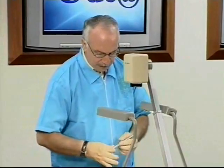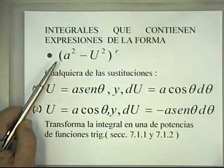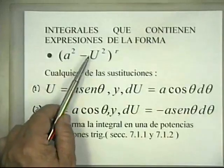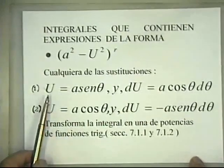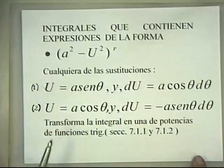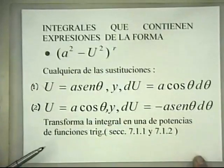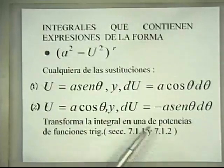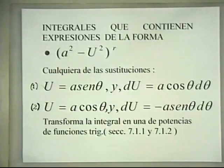Cuando el integrando contiene alguna de estas expresiones, unas sustituciones trigonométricas apropiadas permiten transformar la integral en una integral que contiene potencias de funciones trigonométricas. El primer caso corresponde a integrales que contienen expresiones de la forma a² menos u² a la r, siendo a una constante positiva, u una función diferenciable y r un número racional.